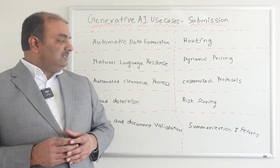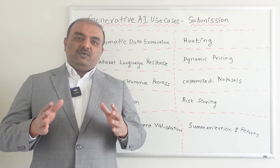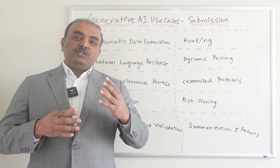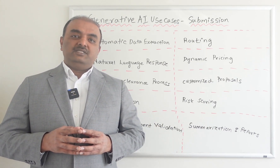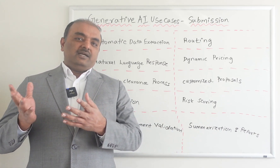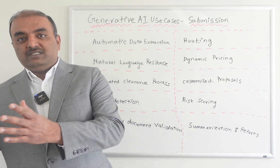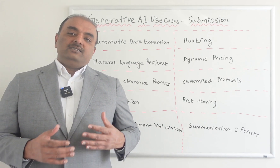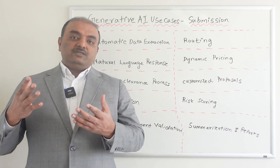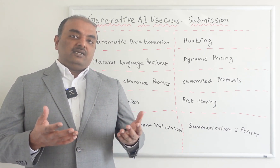Risk scoring — it's nothing but predictive modeling. If you have a submission which is a very simple one, we don't want an underwriter to look at it. So we can build predictive models within the submission process which can give scoring from one to ten. Maybe if it's a score of two, no underwriter needs to look at it because it's a simple submission and it can be processed automatically — the policy document can be generated and sent to the customer or broker. Whereas if it's a complex submission with a score of eight or nine, somebody from the underwriting team can look at it and determine the next steps.